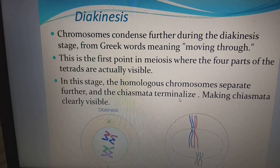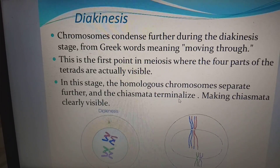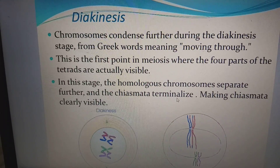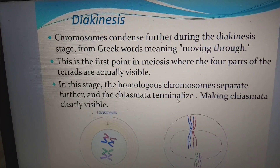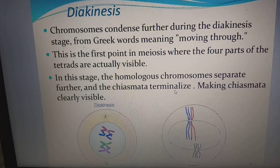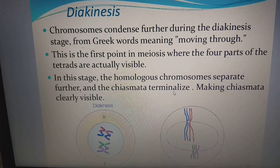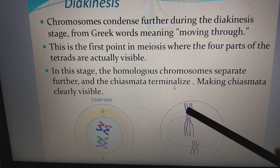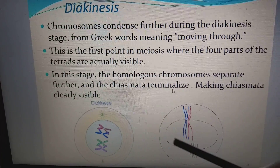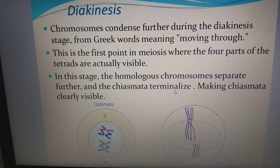During diakinesis — from Greek meaning moving through — chromosomes condense further. This is the first point in meiosis where the four parts of the tetrad are actually visible. In this stage, the homologous chromosomes separate further and the chiasmata will terminalize, making the chiasma clearly visible. We can see the exchange of colors — one chromatid has moved to another chromosome — showing that exchange of chromatid material has occurred. This whole movement is called diakinesis.